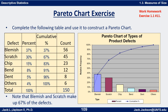Now we need to put these in order from largest to smallest — in this case they already are. So we draw our bar graph with blemishes first at 37%, scratches next at 30%, and so forth, ending with others. That's the decreasing bar graph. Then for the ogive, we look at cumulative percentages starting at zero, going to 37% at blemishes. Blemishes and scratches together make up 67% — they're over half the problem, the significant few. The trivial many are chips, bends, dents, and others. The ogive ends at 100%.